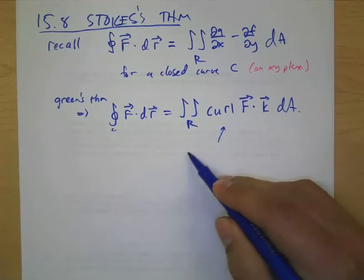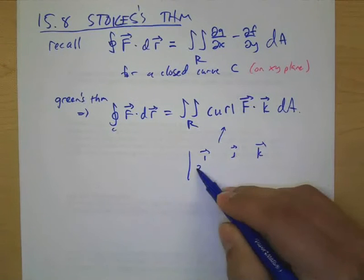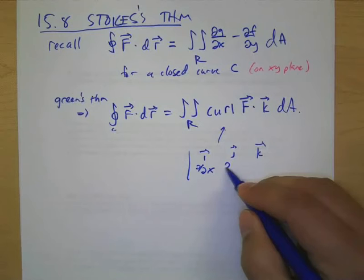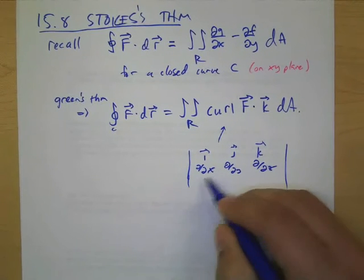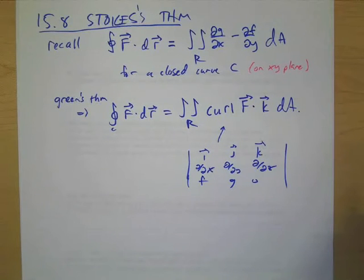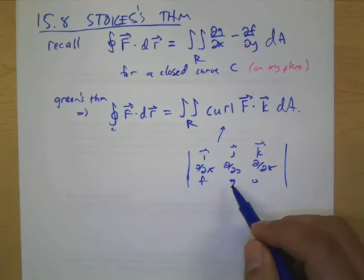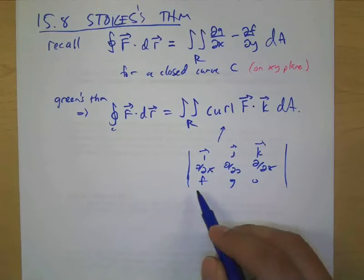This would be the same thing as calculating the curl of the vector field and dotting it with k. And if you're not sure why, you can kind of quickly verify. The curl would be del crossed with F.